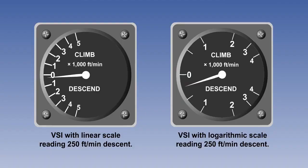There are two basic types of display for the instrument dial. The display on the left uses a linear scale to show the rate of climb or descent. In this particular example, the display is graduated in equal increments of 1,000 feet, up to a maximum rate of climb or descent of 5,000 feet per minute. In the example, the VSI is showing a rate of descent of 250 feet per minute.